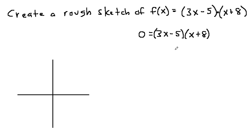So to do that, we're going to use something called the zero-product property, which says when you have a product equal to zero, either the first part of the product is equal to zero, or the second part of the product is equal to zero.